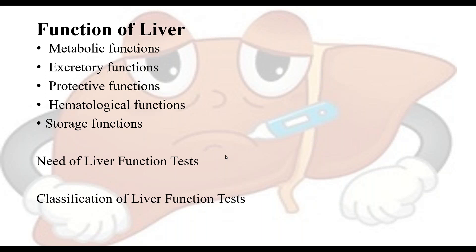Other than this, bile pigments, bile salts, and cholesterol are also excreted in the bile, which then enters the intestine. The liver also stores glycogen, vitamin A, vitamin B12, and trace elements of iron. It stores iron because it has to perform hematological functions, which involve the synthesis of plasma proteins, destruction of erythrocytes, and formation of blood.